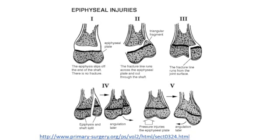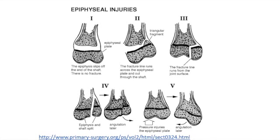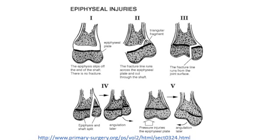In type 3, it's separated from the bottom right. Even if they realign it, the epiphyseal plate will never be perfectly realigned — the same situation applies to type 4. In type 4, the left side has grown a little more than the right. In type 5, the left side was crushed and caused the epiphyseal plate to close early.